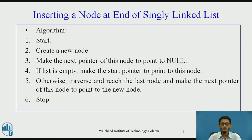Now there are two different scenarios we need to check. If the list is empty, meaning if there are no elements in the linked list, we will make the start pointer point to this node. Otherwise, if there are some nodes already present, we will traverse and reach the last node of the linked list and then make the next pointer of that node point to the new node being added at the end.